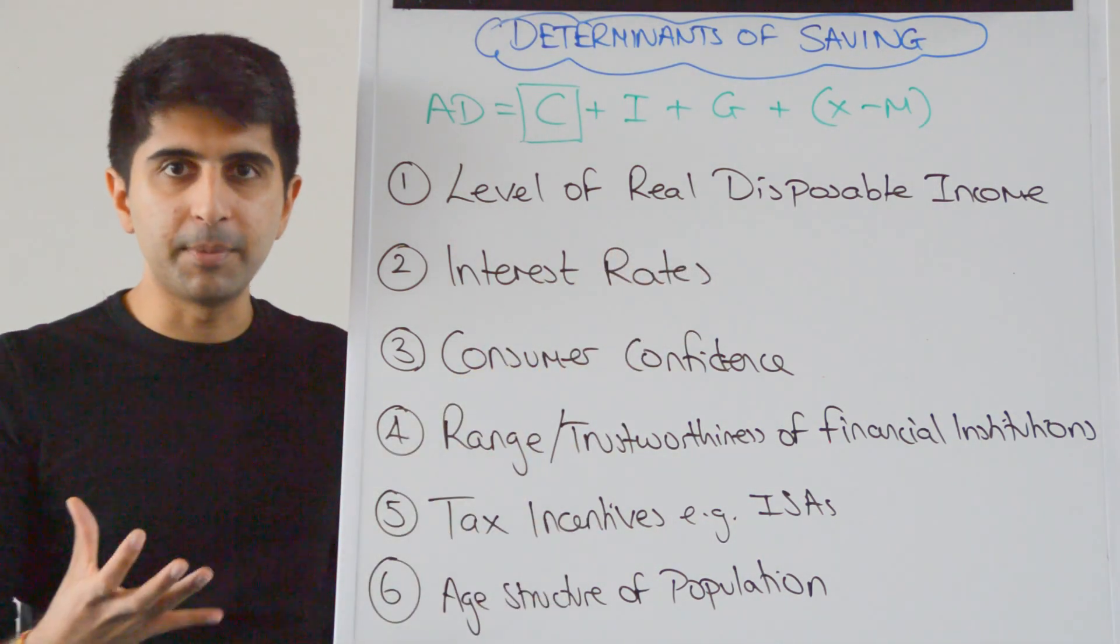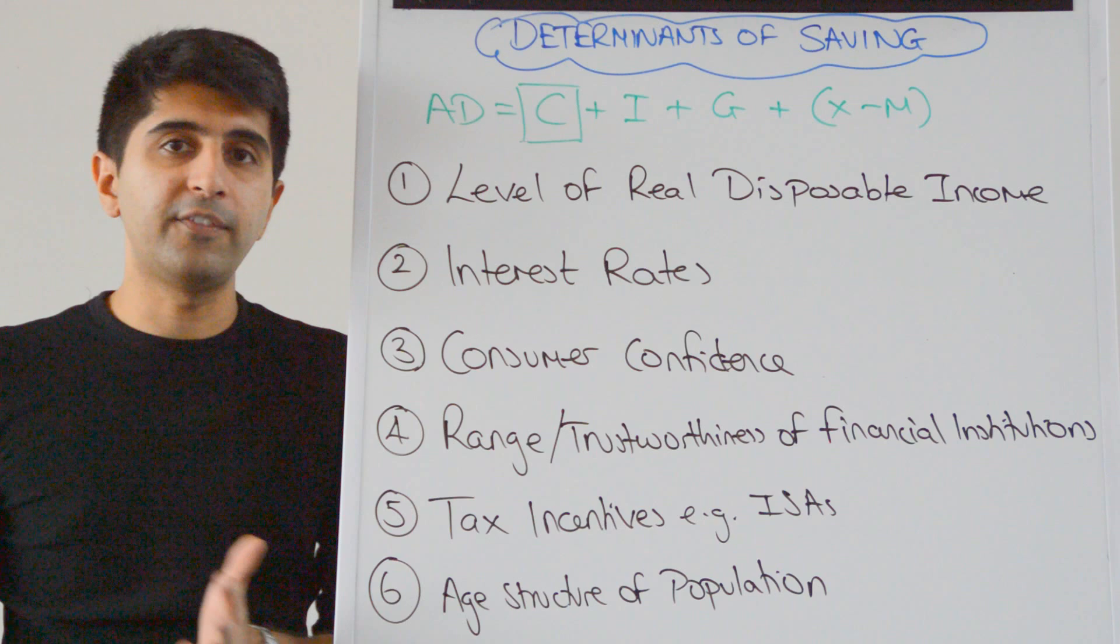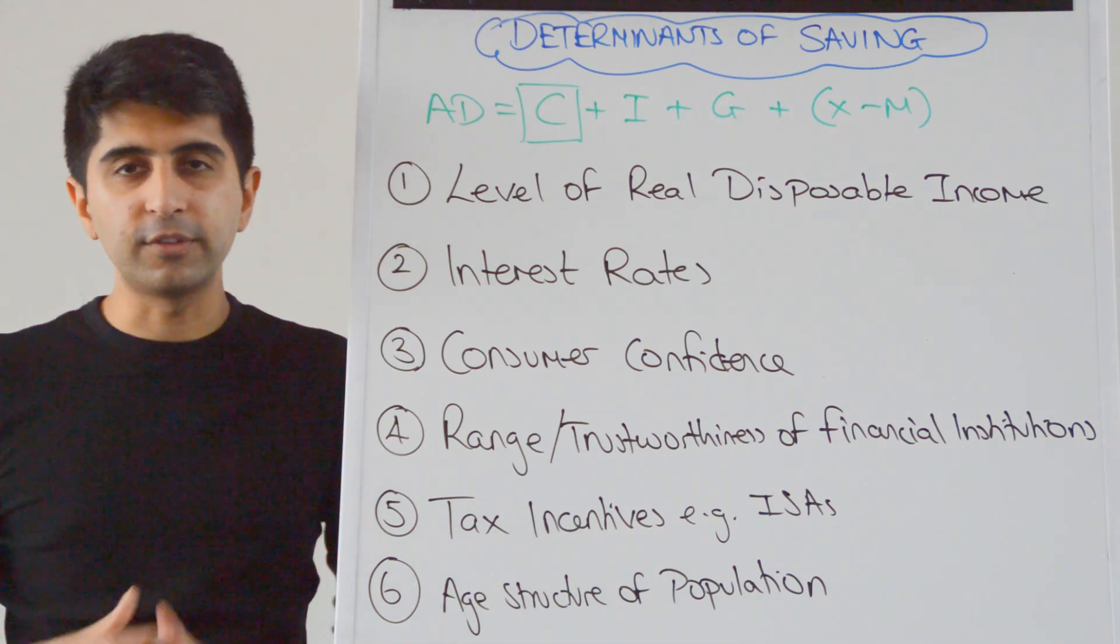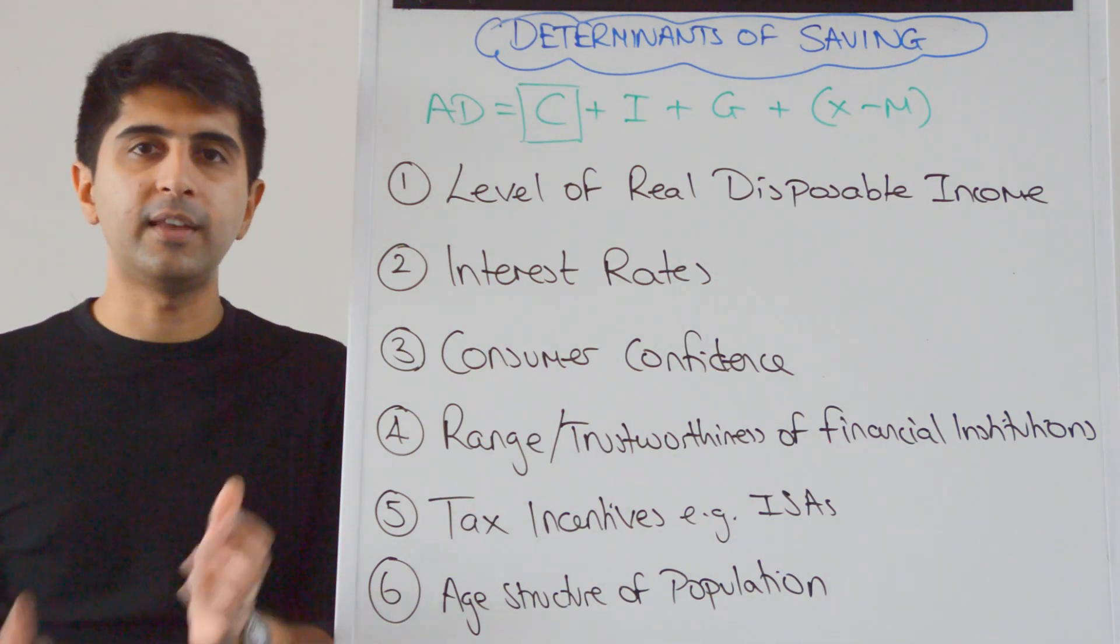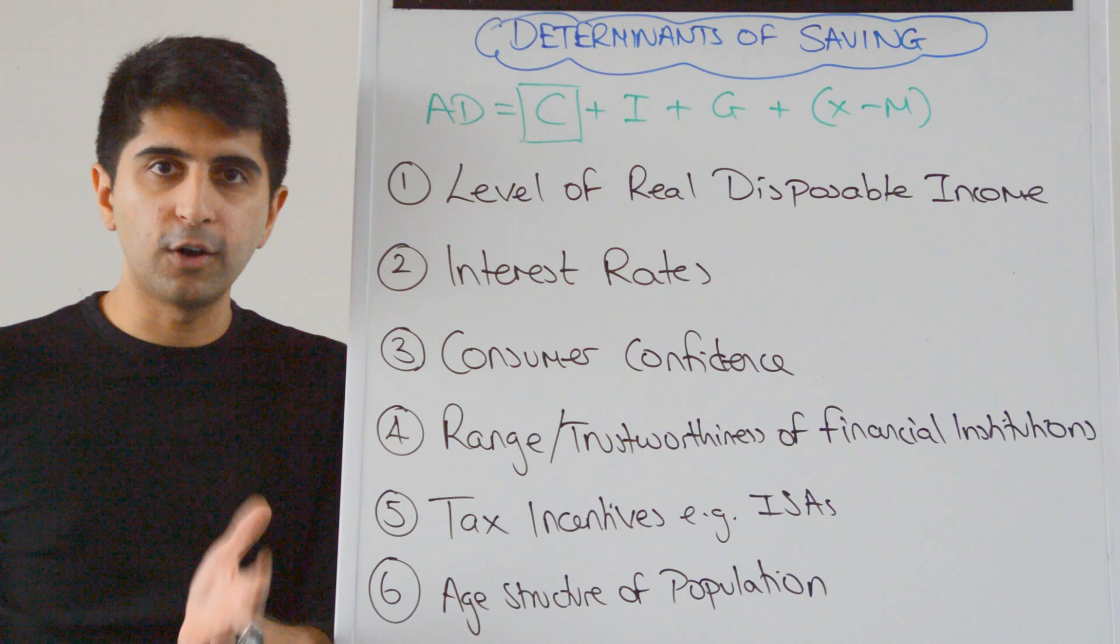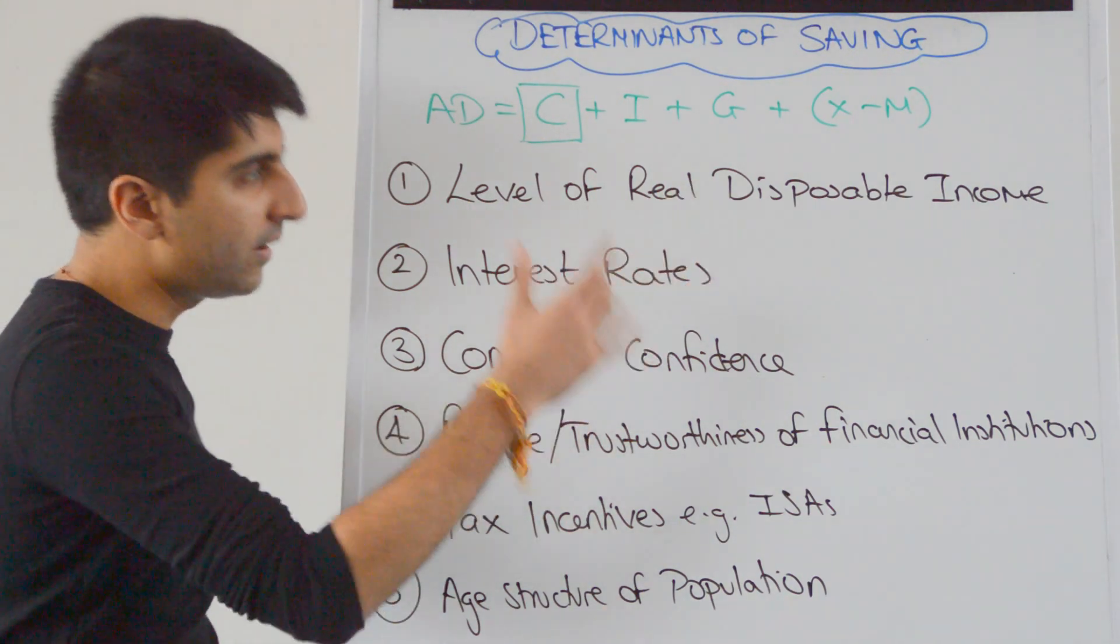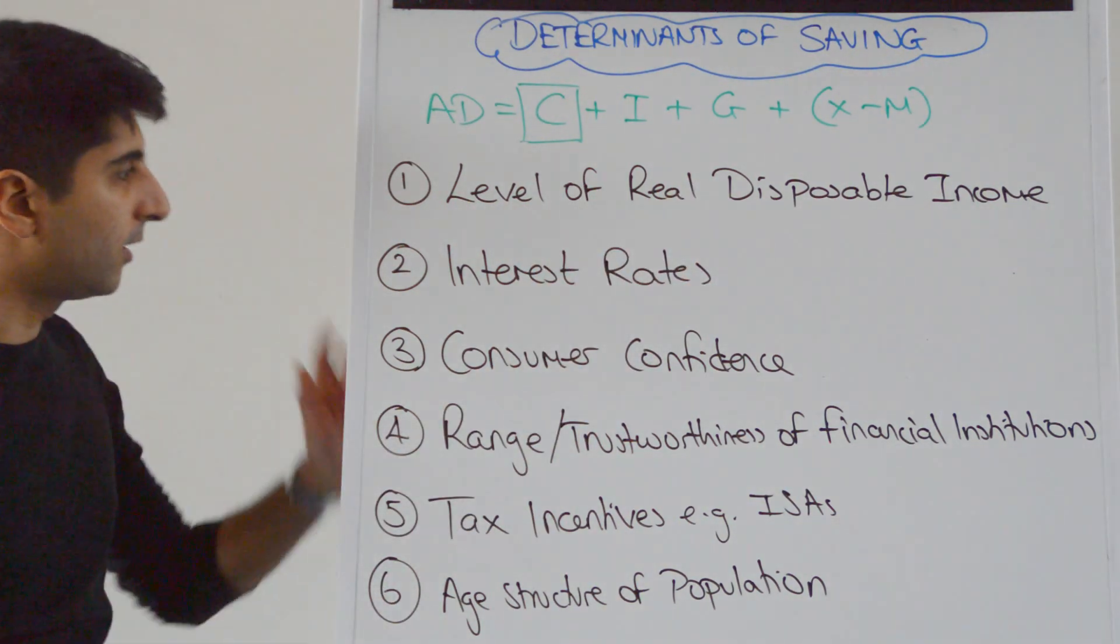In developing countries this is a very big point. Even in developed countries like the UK, you know the poor households save a very, very, very small percent of their income. Most of it has to go in consumption activity. So the level of real disposable income is a key determinant of saving.